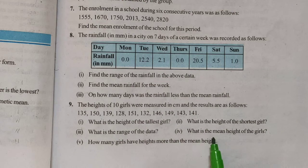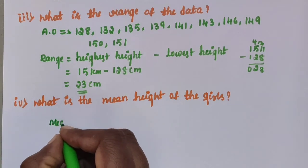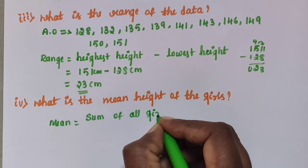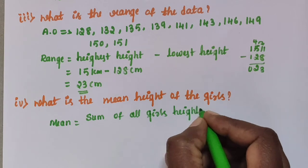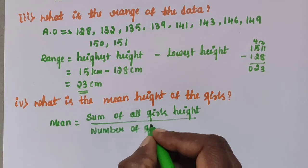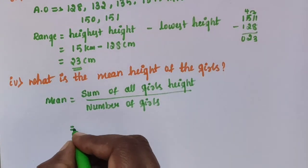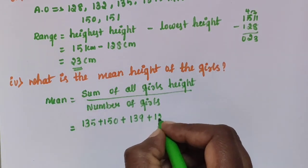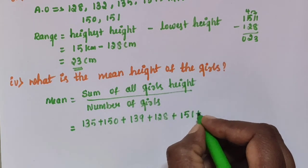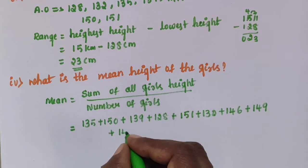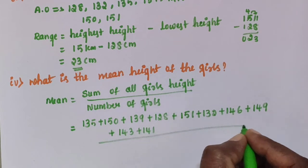Sub question 4: What is the mean height of the girls? Mean is equal to sum of all girls' heights divided by number of girls. The heights are: 135 + 150 + 139 + 128 + 151 + 132 + 146 + 149 + 143 + 141, divided by 10.